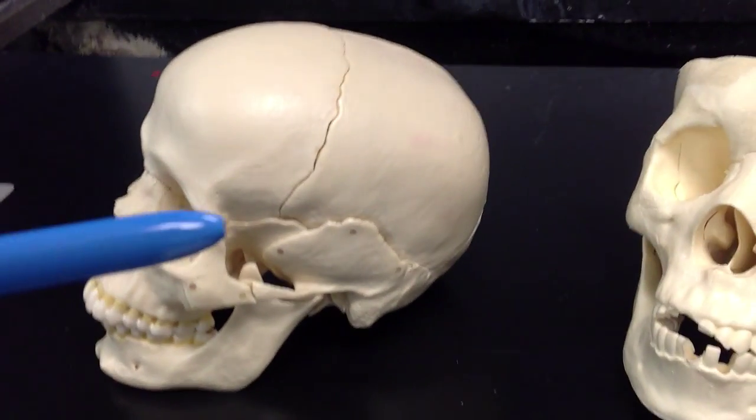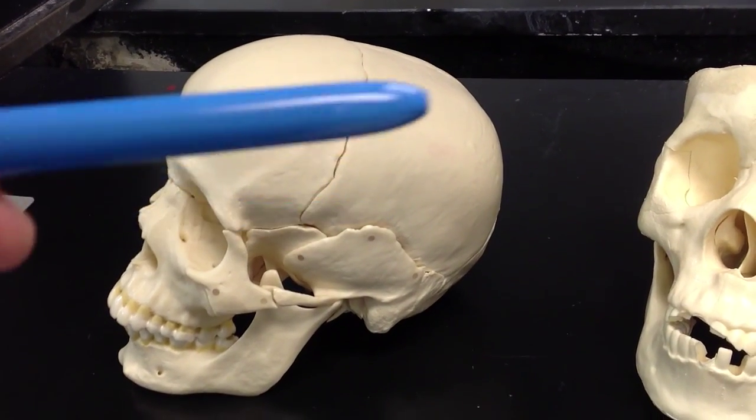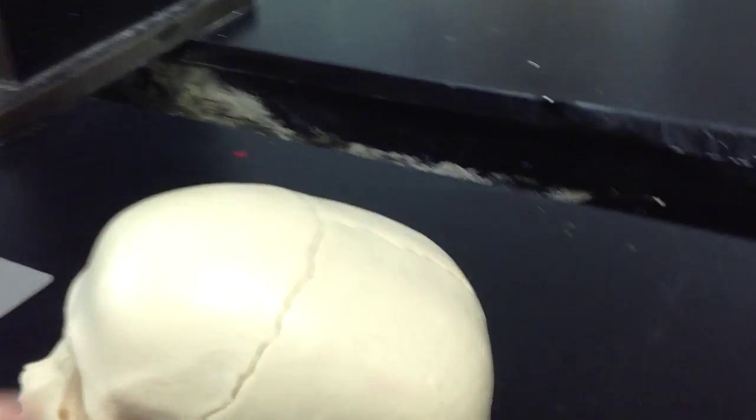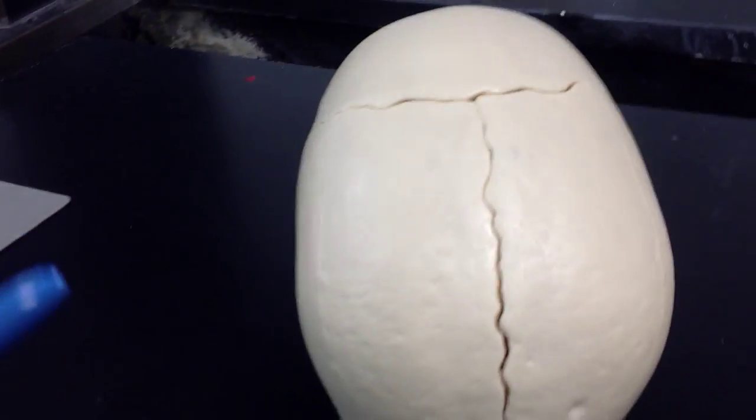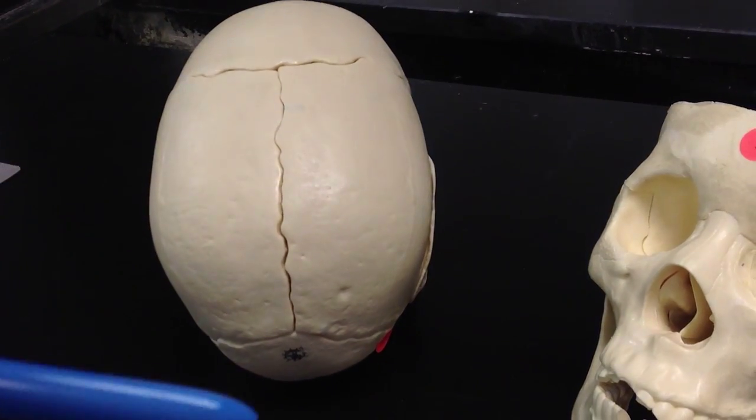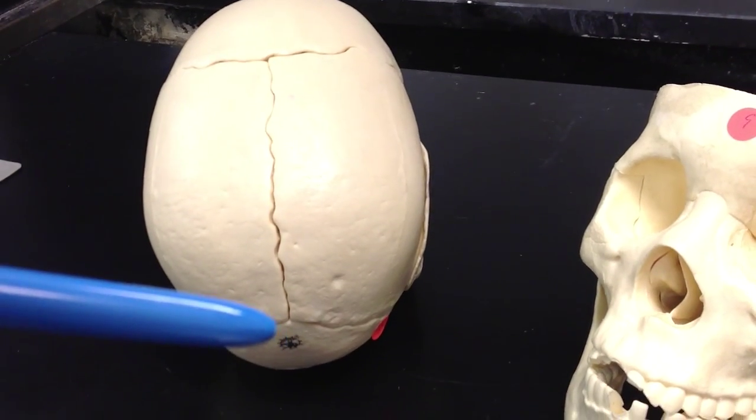As we continue, right in this area, right along here, we're going to have our parietal bone. Now, that parietal bone is on either side of the skull, so you will see it both here and here. Moving to the back, that's going to leave us right there. That's going to be the occipital bone.